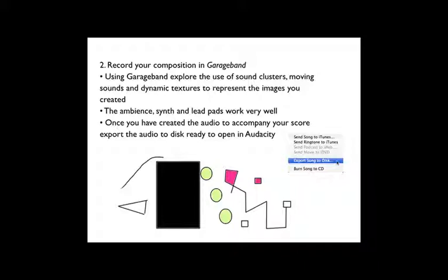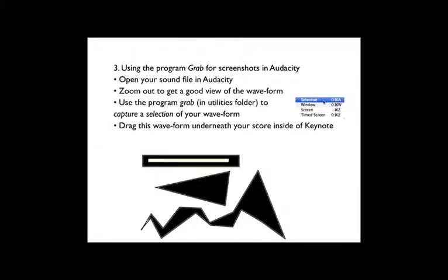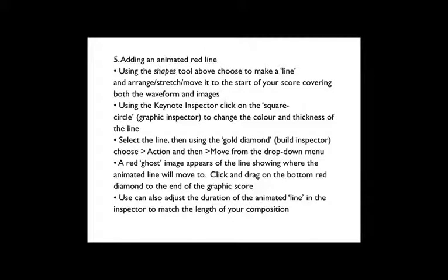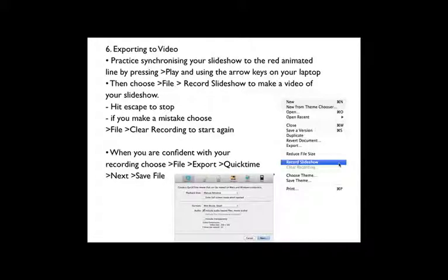You will be creating your own composition in GarageBand. You can then use Grab to take screenshots of the waveform in Audacity. When we put it all together in a Keynote file, we will be using the inspector to drag in our audio and images, and then add an animated red line for the duration of the composition. And lastly, we will export to a QuickTime video.